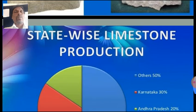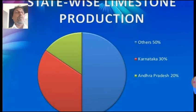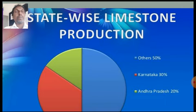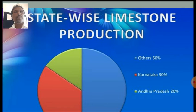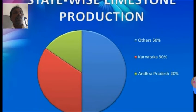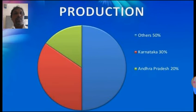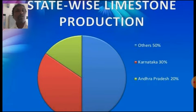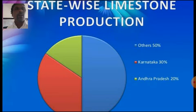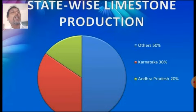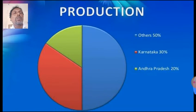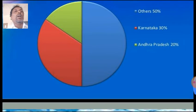Where is rock mineral found in our country? Rock mineral producing states: Karnataka produces 30% of the total, and Andhra Pradesh produces 20%. The remaining 50% is distributed across all other states. Karnataka is the largest producing state, followed by Andhra Pradesh.